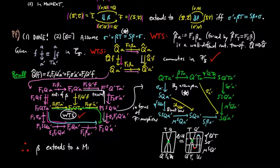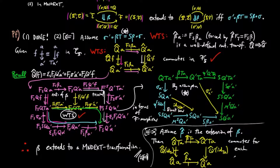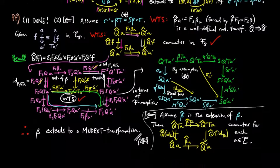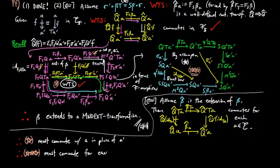Thus β extends to a transformation in the category of monad extensions. For the forward direction, we assume β̂ is the extension of β. Then the following square commutes in the Kleisli category for the monad S for each object A in E. Note that the identity morphism on TA in the underlying category F is a morphism in the Kleisli category from TA to A. Then we replace the morphism F in the purple diagram with the identity on TA. We see that the yellow naturality square for the identity on TA commutes if and only if the bottom rectangle in purple commutes, if and only if the square on the right commutes. Therefore we have σ'βT equals Sβσ, which completes the proof.